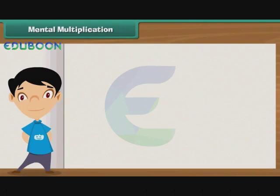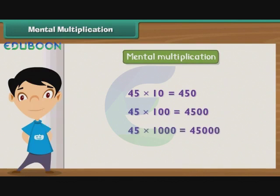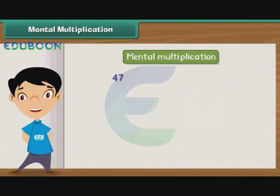Mental multiplication. Having learned mental addition and subtraction, let us proceed to learn mental multiplication. To multiply a number by 10 or its multiples, add the same number of 0s to the result as in the multiplier. To multiply a number by 9, multiply it by 10 first and then subtract the number itself from the result.